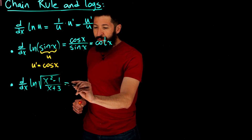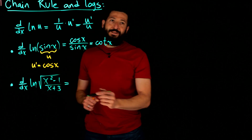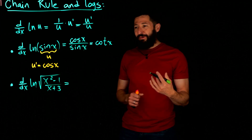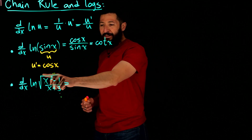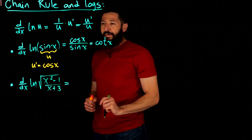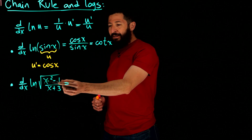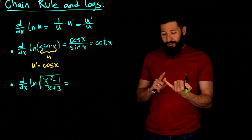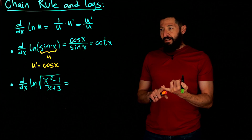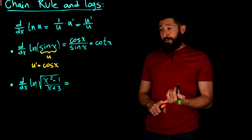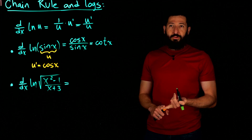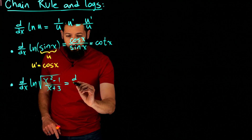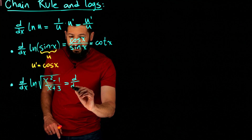If you just apply the rule again with u being a complicated expression involving a square root, you may want to reconsider, because then you end up needing the derivative of that square root, which requires a chain rule and then a quotient rule. Instead, you can use rules of logarithms to simplify your expression first.